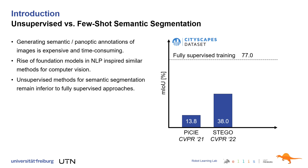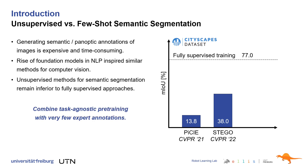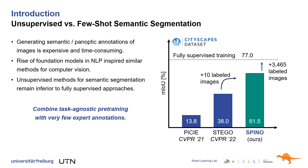Therefore, we argue that it's time for a paradigm shift. We propose to combine task-agnostic pre-training from unsupervised foundation models with very few expert annotations. Our proposed few-shot panoptic segmentation method significantly outperforms prior unsupervised methods by leveraging only 10 annotated images.